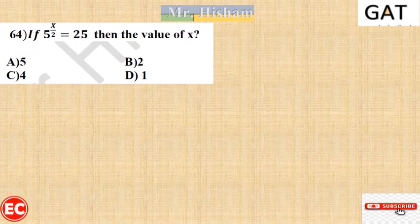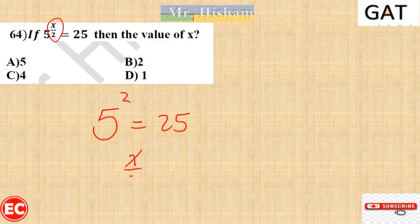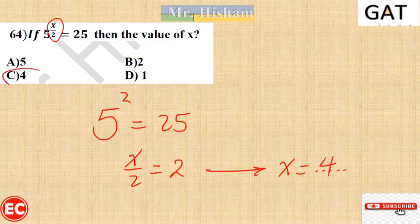Question 64: 5 to the power of x/2 equals 25. Since 5² equals 25, the exponent x/2 must equal 2, so x equals 4. A common mistake is writing x equals 1 or x equals 2, so be careful.